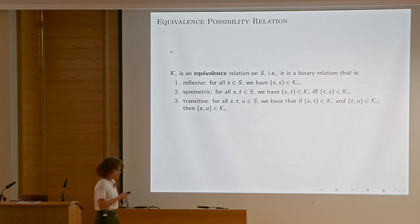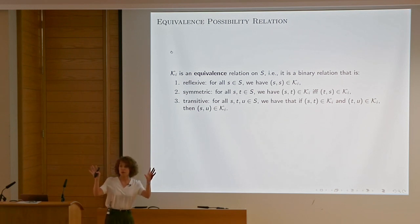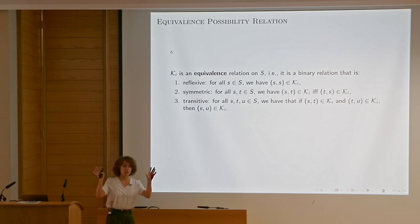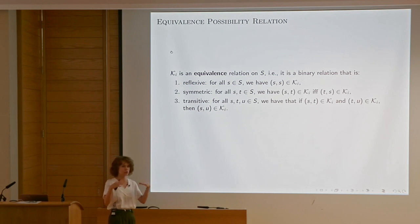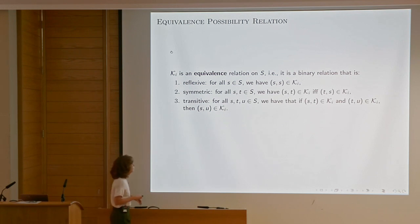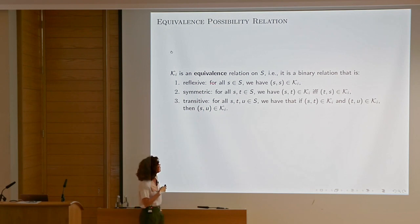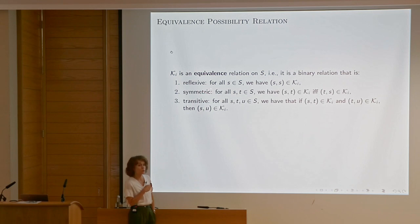One more technical point: this relation between worlds will be assumed to be an equivalence relation. The agent doesn't know whether it's sunny in London or not, but she doesn't prefer any of those worlds — they are just equally plausible. There is no hints, no evidence, nothing that makes her prefer one over the other.